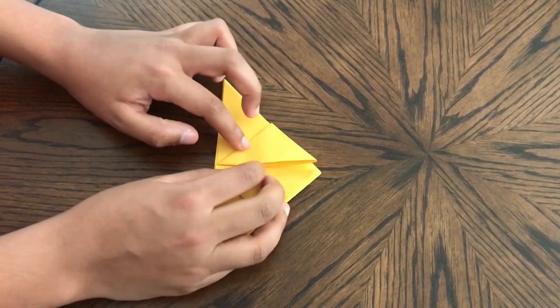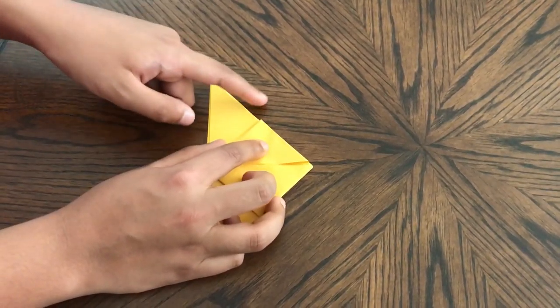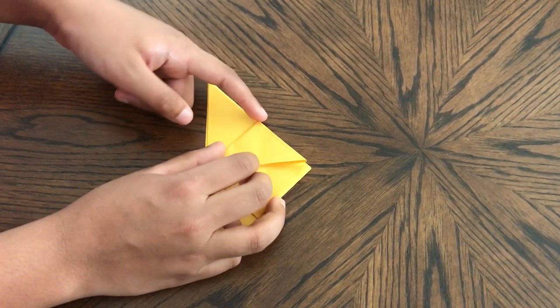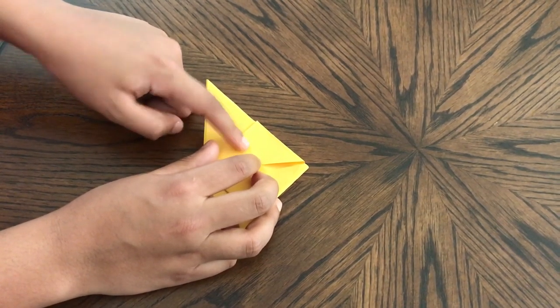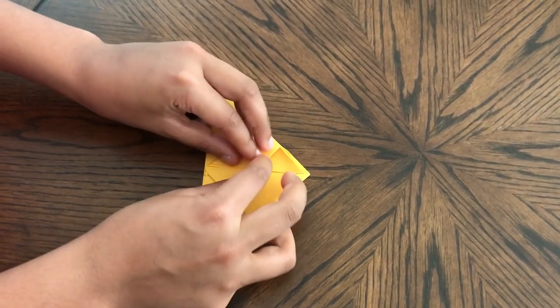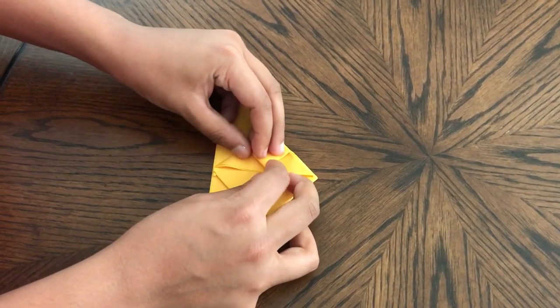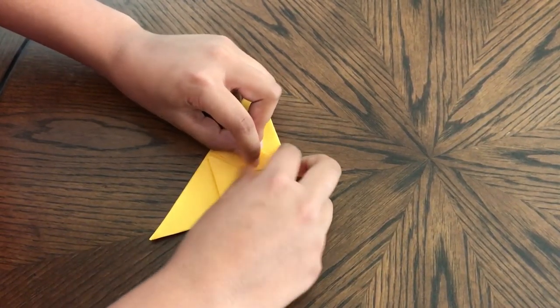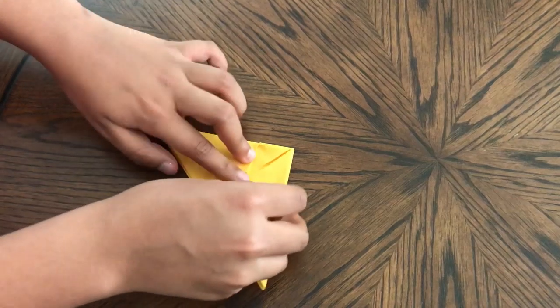Now what you're going to do is fold this corner to the middle of this square. Like that. And then repeat on this side.